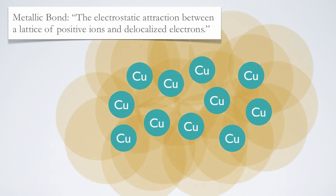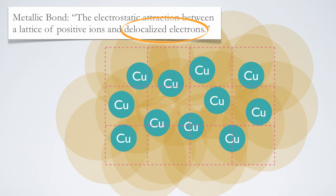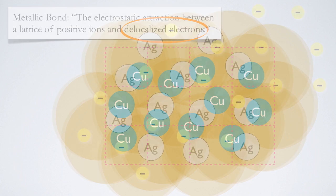These shared valence electrons are called delocalized electrons, because they're free to roam around, and as you can see, the positive metal ions form a rough lattice.